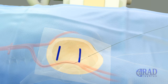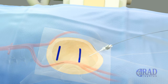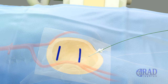Subsequently, the needle is exchanged for a transitional sheath, which is advanced over the microwire. The microwire and inner dilator of the transitional sheath are then exchanged for a wire with larger diameter and longer length, which is advanced through the transitional sheath into the aorta.